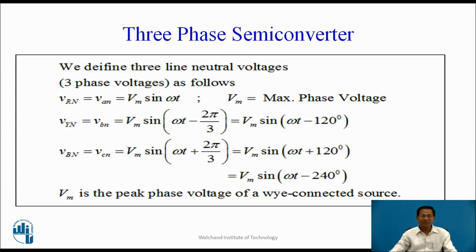We define three line-to-neutral voltages as follows: Vrn = Van = Vm sin(ωt); Vyn = Vbn = Vm sin(ωt − 2π/3); and Vbn = Vm sin(ωt + 2π/3). Here the phase difference is 120 degrees. Vm is the peak phase voltage of a Y-connected source.